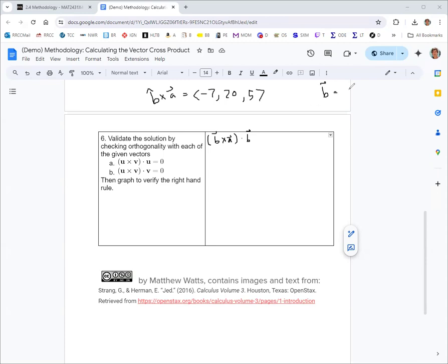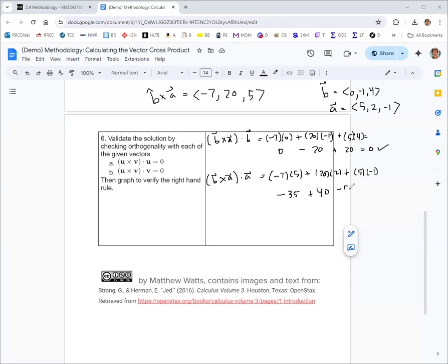B was 0, negative 1, 4. That's going to be zero minus twenty plus twenty, which is zero. You want these to be zero. Now we'll do the dot product of b cross a with a. A was 5, 2, negative 1. So negative seven times five is negative thirty-five, twenty times two is forty, and five times negative one is negative five. That's negative thirty-five plus forty minus five, which is also zero.